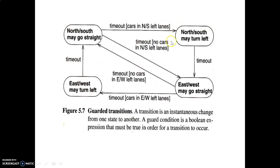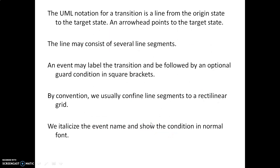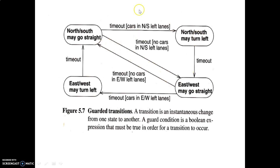Consider the example of car lanes going east-west and north-south. Whether a car can turn left or go straight depends on whether cars are present in those lanes. You can see the timer — if there are no cars in a lane, the cars in the other lanes get to move. Depending on where the cars are, you make a decision. The UML notation for a transition is a line from the original state to the target state; the arrowhead points to the target state.